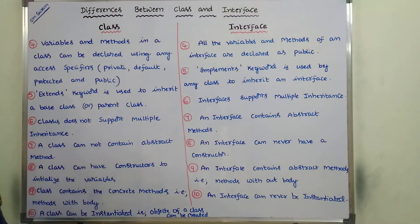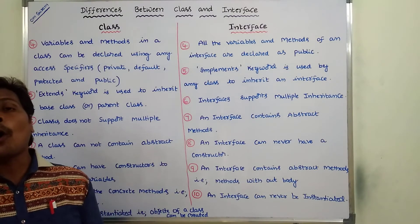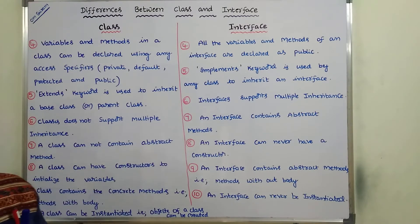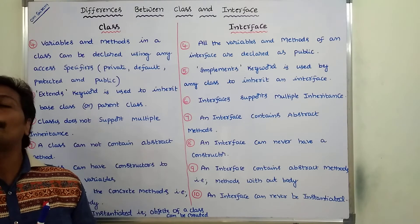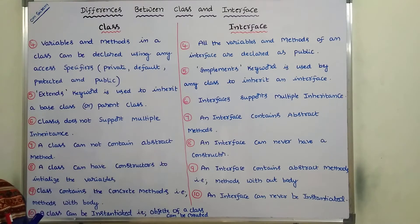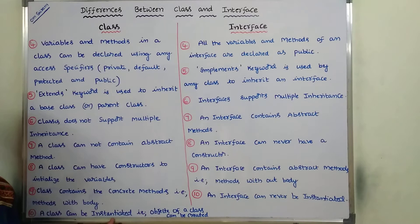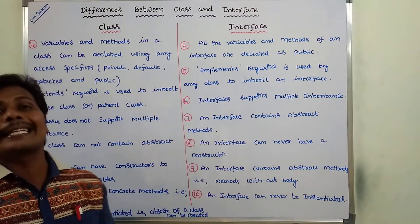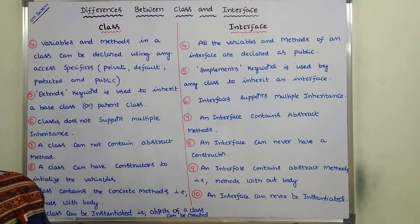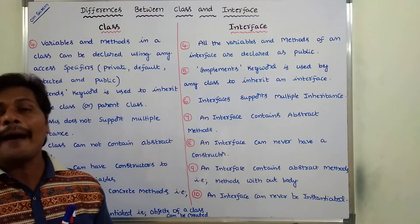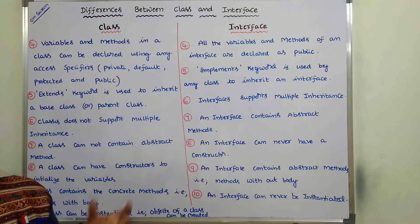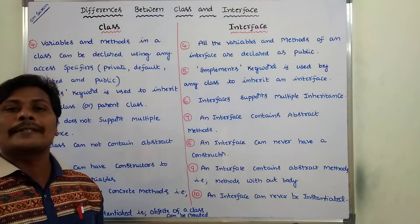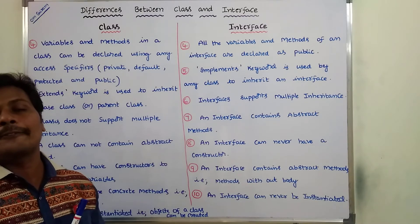Tenth point: a class can be instantiated — that is, objects can be created for a class to access its methods. Whereas in the case of an interface, an interface can never be instantiated. We cannot create objects for an interface because interfaces contain only abstract methods, and because of that reason we do not create an object for an interface.